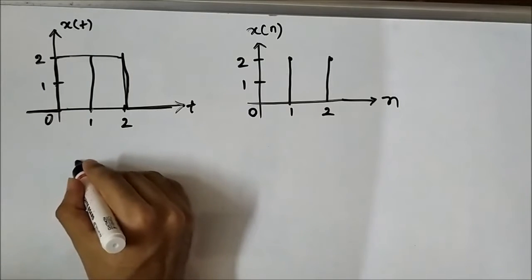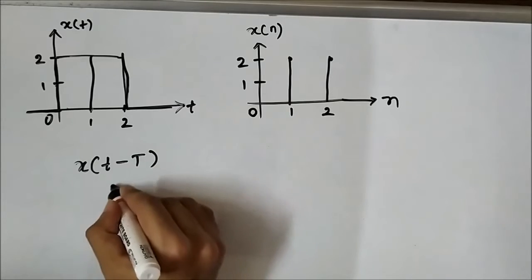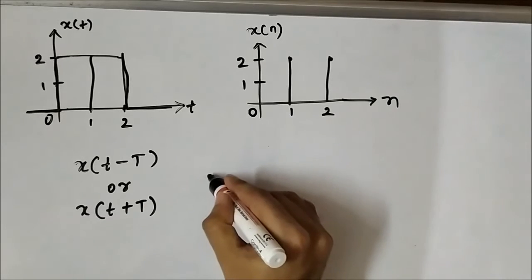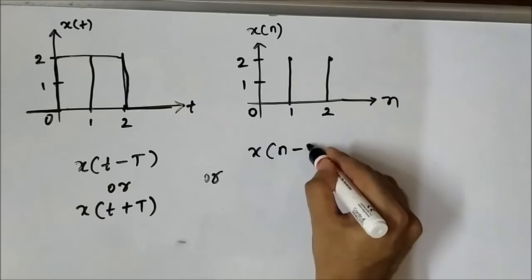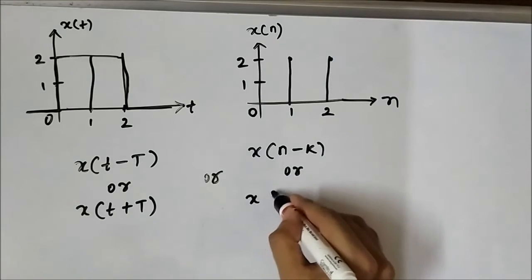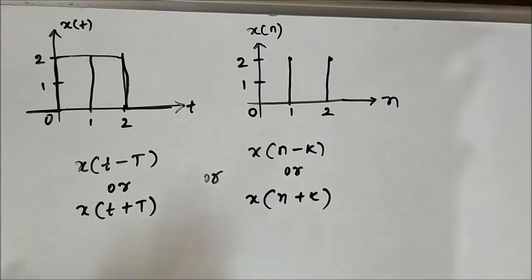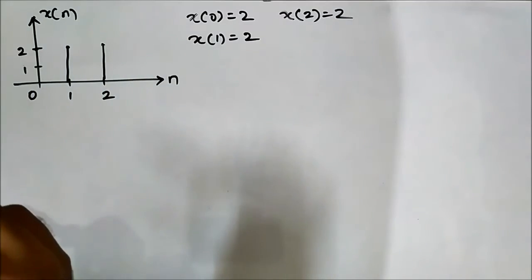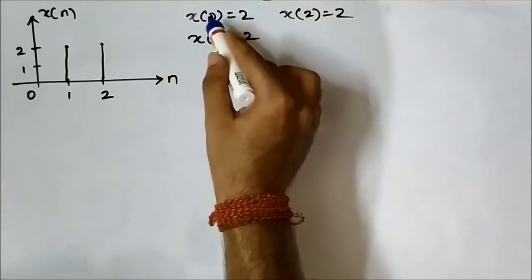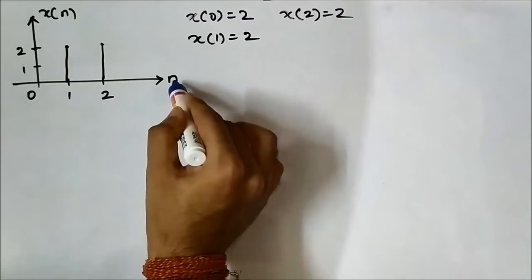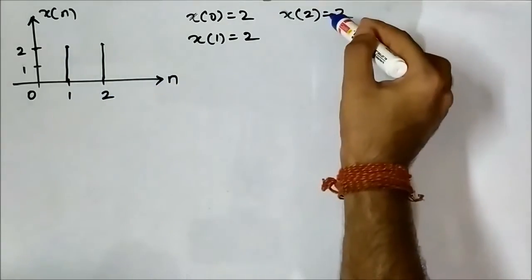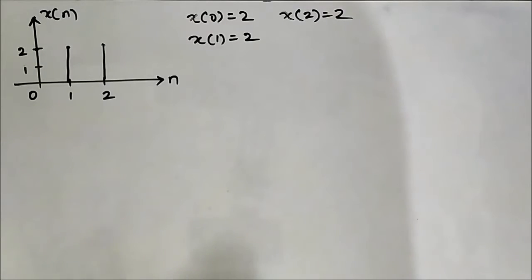Now we have to perform the shifting operation on this discrete time domain signal. In the continuous time domain, shifting took place as x(t − T) or x(t + T). Here, the shifting will take place as x[n − k] or x[n + k]. The discrete time signal has values: at n=0, x[n]=2; at n=1, x[n]=2; at n=2, x[n]=2; and everywhere else it is 0.